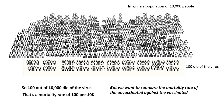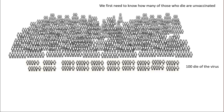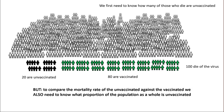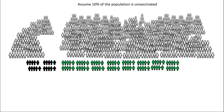We want to compare the mortality rate of the unvaccinated against the vaccinated. We need to know how many of those who die are unvaccinated. Of the 100 who die, suppose 20 are unvaccinated — that means 80 are vaccinated. But to compare the mortality rates, we also need to know what proportion of the population as a whole is unvaccinated.